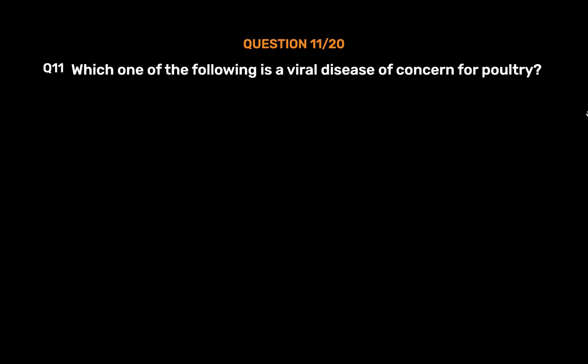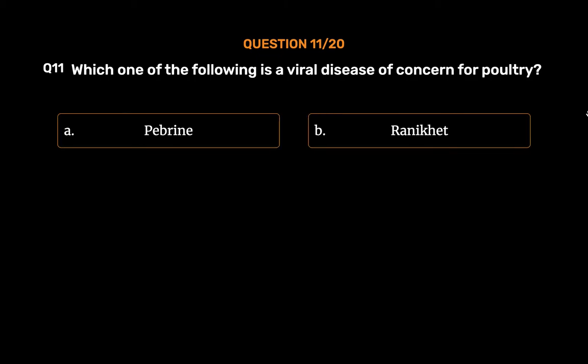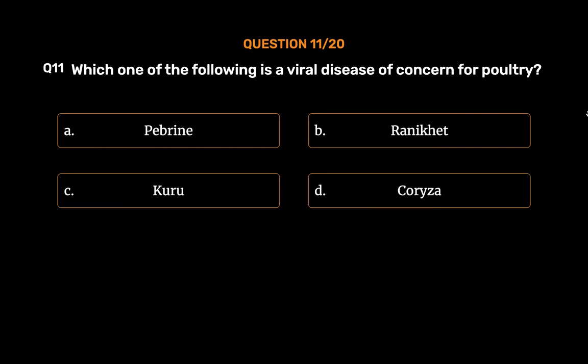Question 11: Which one of the following is a viral disease of concern for poultry? Option A: Pebrine. Option B: Rani Khet. Option C: Kuru. Option D: Kariza. The correct answer is Option B: Rani Khet.